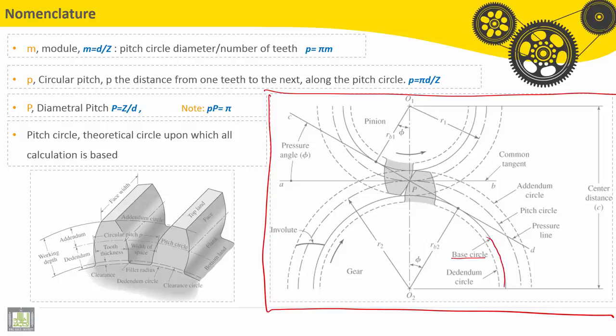Here we have the base circle. This one is the dedendum, and this one, the upper one, is called addendum. The most important circle here is called pitch circle.